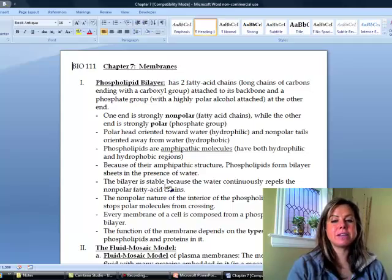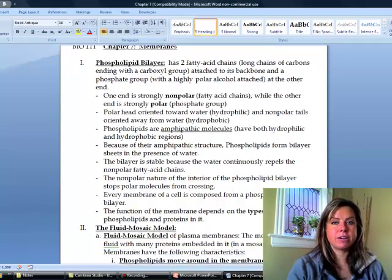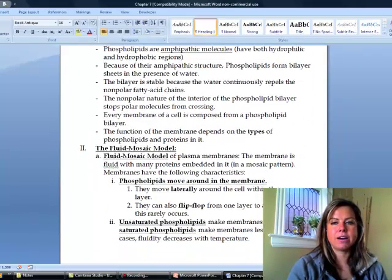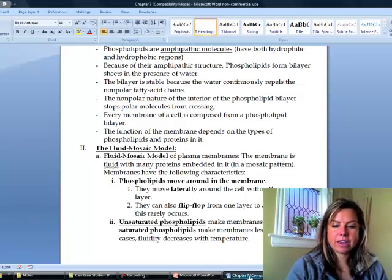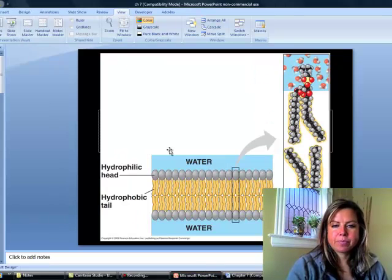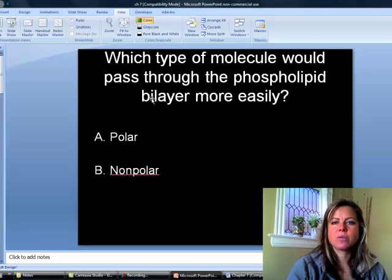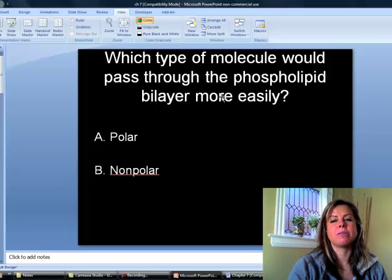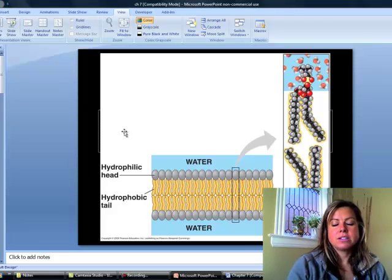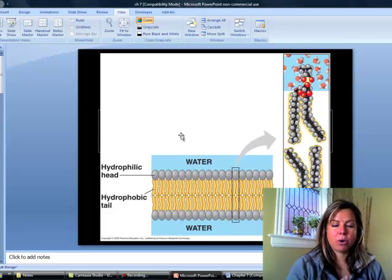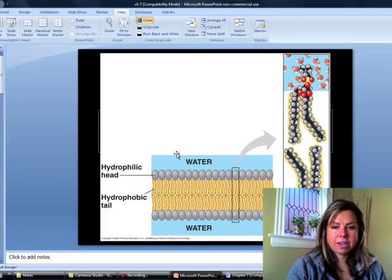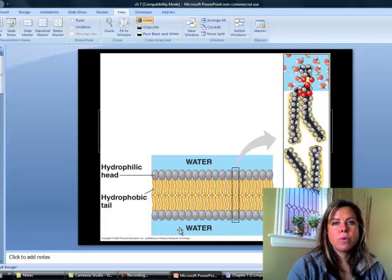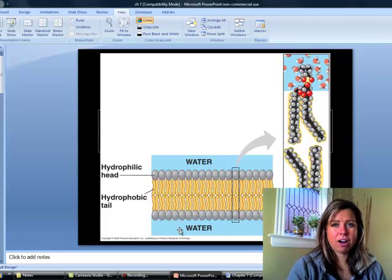Okay, so the bilayer is going to be stable, and that's because the water is always going to be continuously repelling those nonpolar parts of it. And so if we think about this question here, which type of molecule would pass through the phospholipid bilayer more easily? Let's look here. So if we think about polar versus nonpolar, if it's got to get from here all the way across to here, what type of molecule would have an easier time getting across?